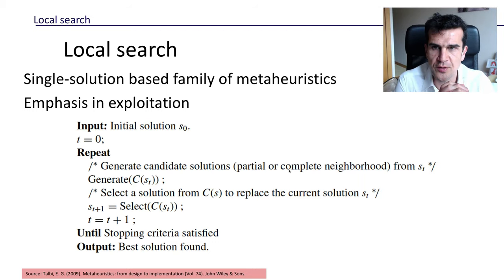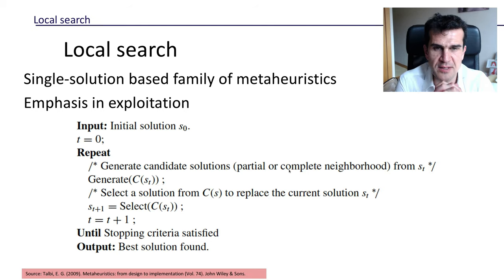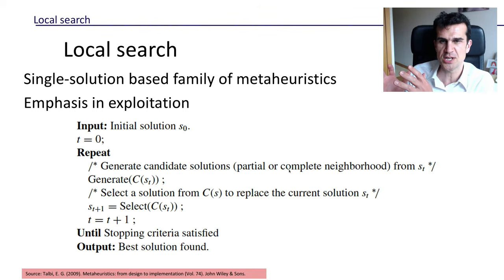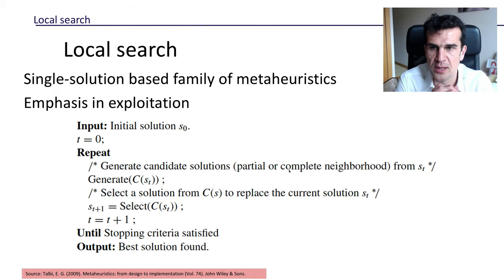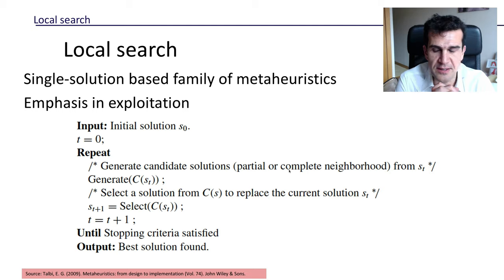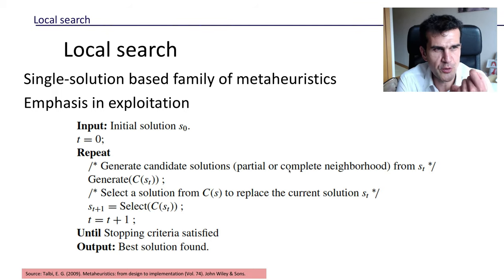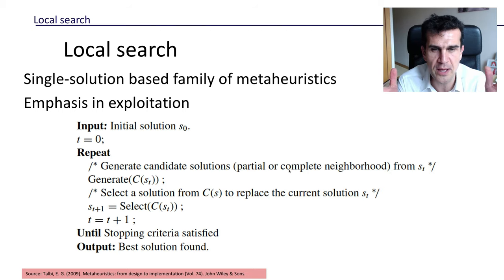In this video we're going to look at a family of metaheuristics called local search. These are single-solution based metaheuristics, and the emphasis here is on exploitation. We saw random search, which is all about exploration. Local search is all about intensification, about exploitation. The general idea is that we start from a solution and look at the local neighborhood.